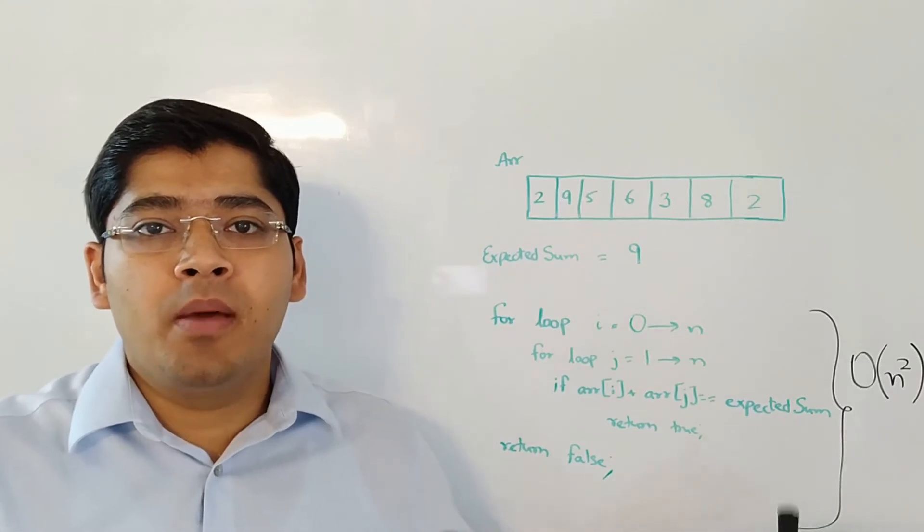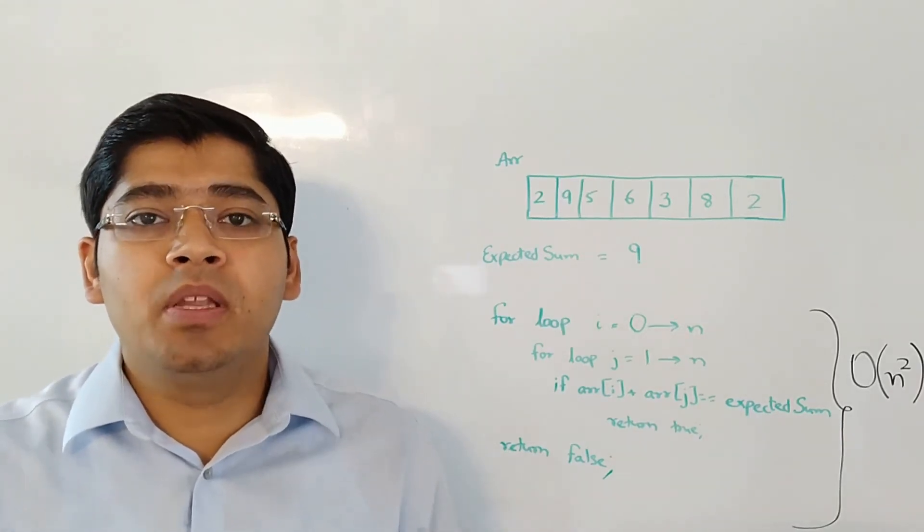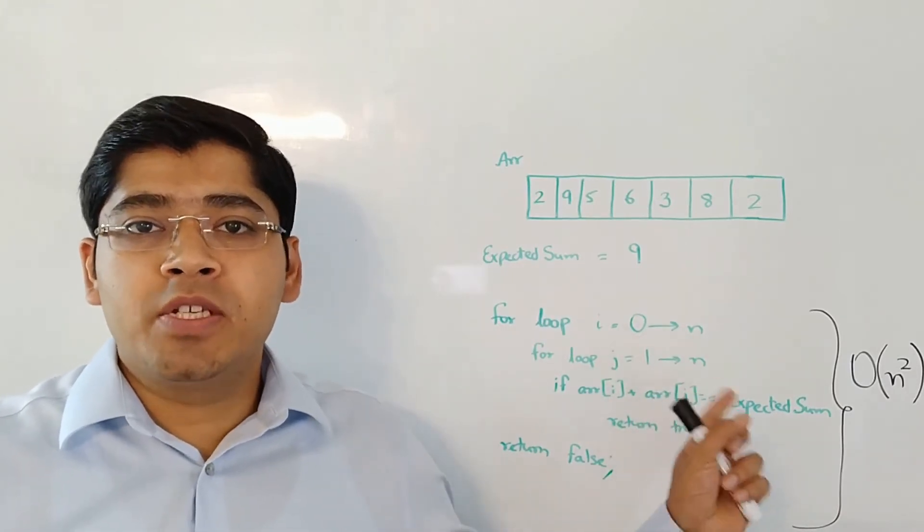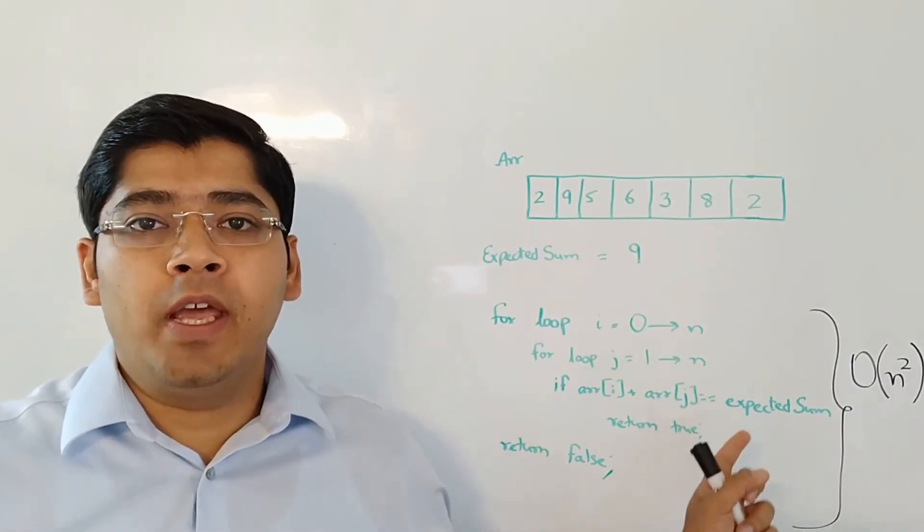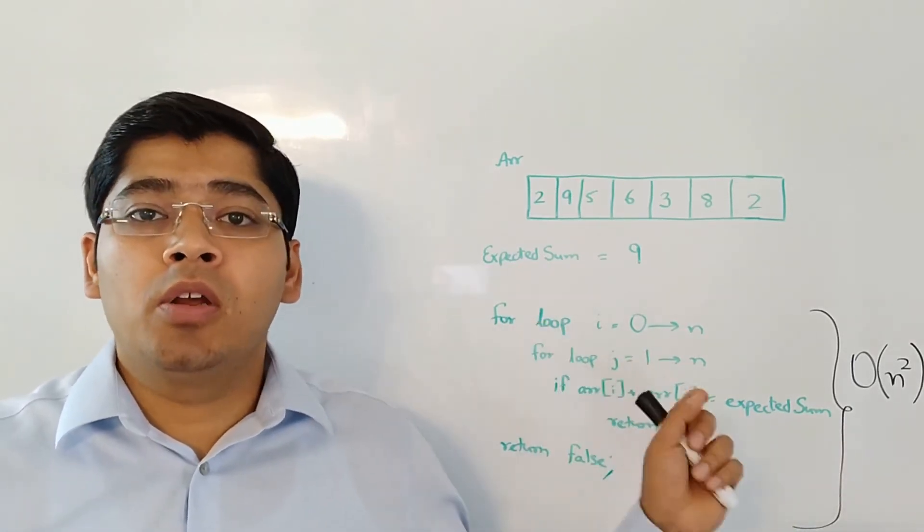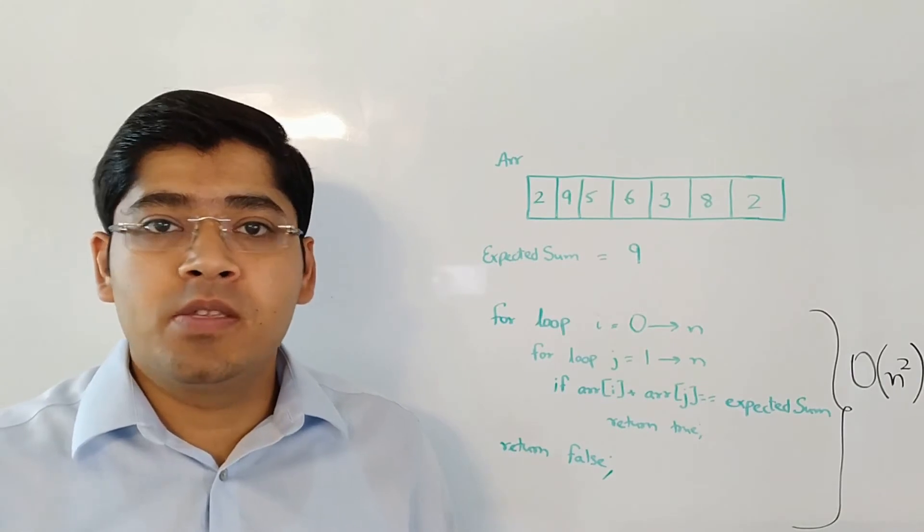Next thing that the interviewer will ask you is the runtime complexity of this pseudo code. If you were to write this program in actual code, what will be the runtime complexity? Well, in our case, there are two nested for loops, each going one from 0 to n and the other one from 1 to n. So the algorithmic complexity here will be O(n²).